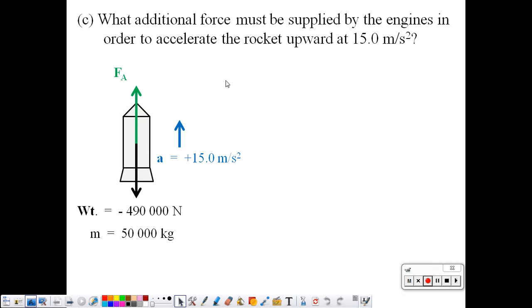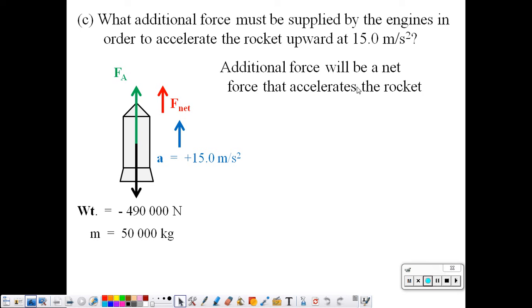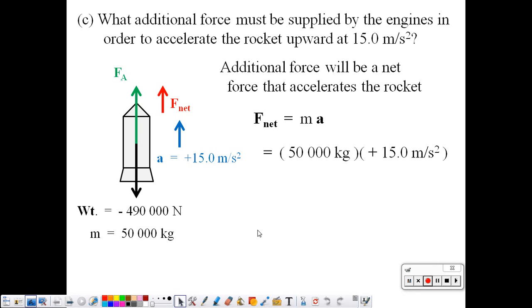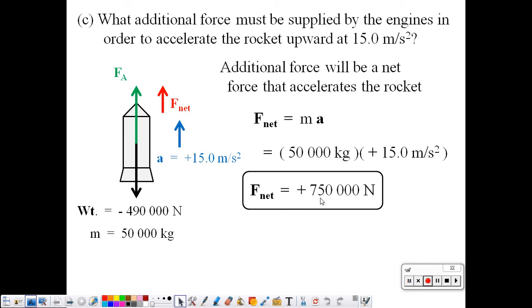Part C: what additional force must be supplied if we want to accelerate this rocket up at 15 meters per second squared? To accelerate the rocket, we need an additional force beyond just the weight — we need a net force. Only net forces cause acceleration. The net force can be found using F net equals ma. We know the mass is 5 times 10 to the 4th kilograms and the desired acceleration. Plugging in our numbers, we get a net force of 750,000 newtons. That's the additional force used to accelerate the rocket up.